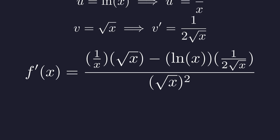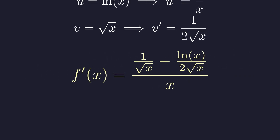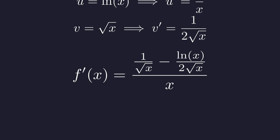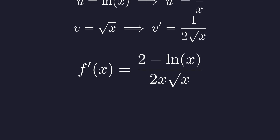Now we substitute these four parts into the quotient rule formula. Let's simplify this term by term. The square root of x divided by x is 1 over the square root of x, and the denominator becomes x. This gives us a simplified complex fraction. To combine the terms in the numerator, we use a common denominator of 2 times the square root of x. The numerator is now a single fraction. Finally, simplifying the complex fraction gives us the clean final form of the derivative.